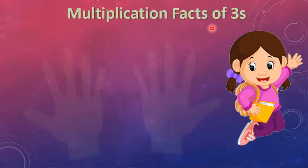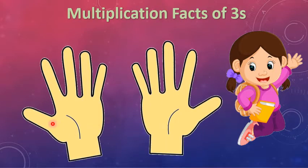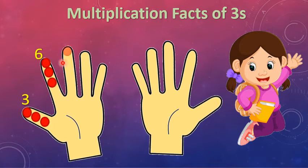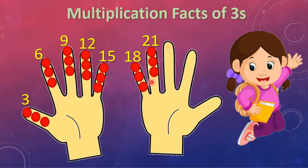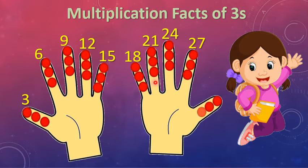Now, in our multiplication facts of 3, we can use our fingers by dividing each finger into 3 equal parts, like this. Starting from the first finger on the left, it will be 3, 6, 9, 12, 15, 18, 21, 24, 27, and 30. If you notice here, we count by 3, not by 1, because each finger represents a 3.